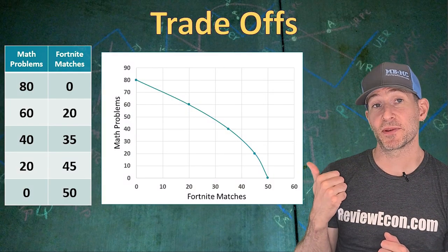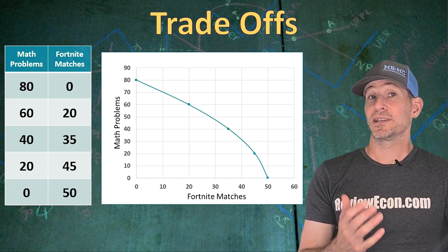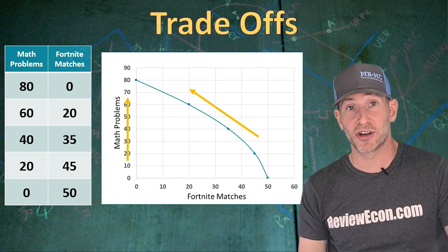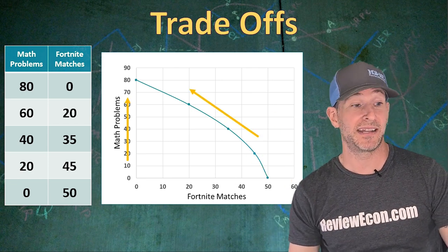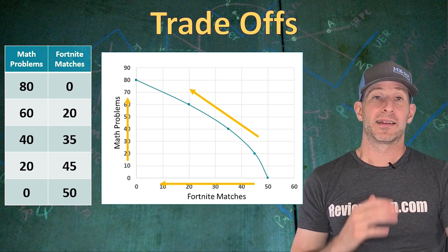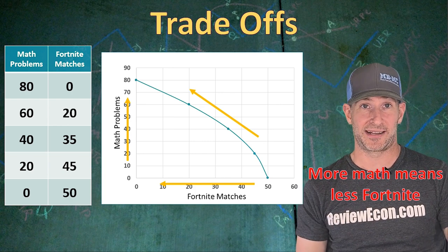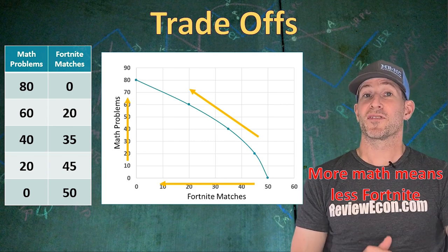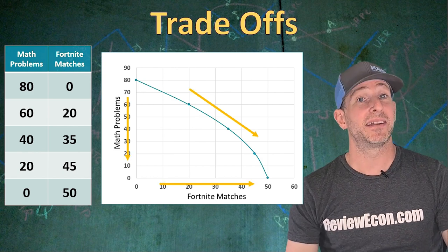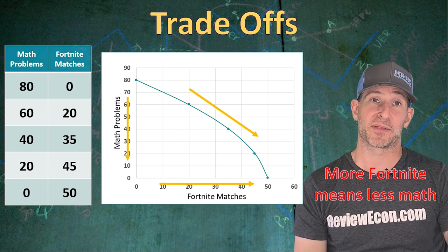On this Production Possibilities Curve, we see some trade-offs. As you complete more math problems, that's going to move you up that curve, meaning you have to give up some of your Fortnite matches. So the trade-off here is more math means less Fortnite. We could reverse this and go the other direction down the curve, meaning more Fortnite matches but less math problems.